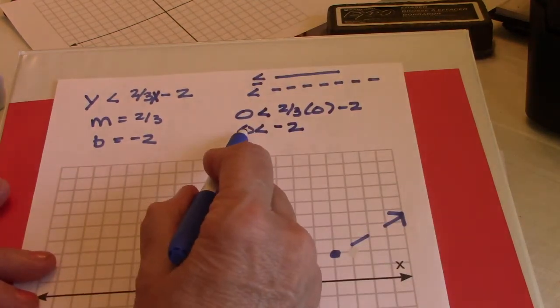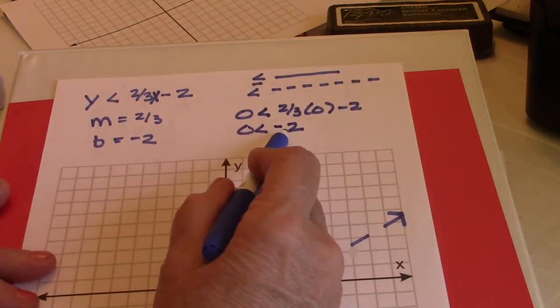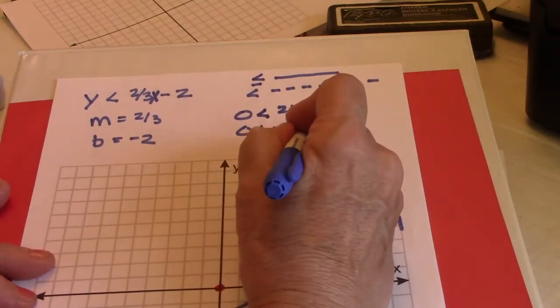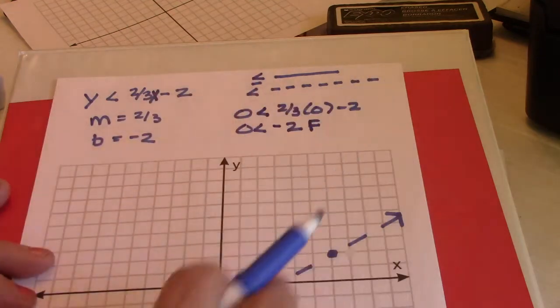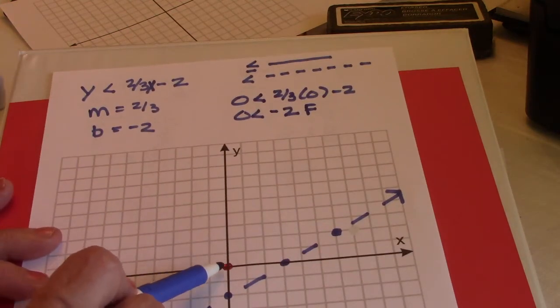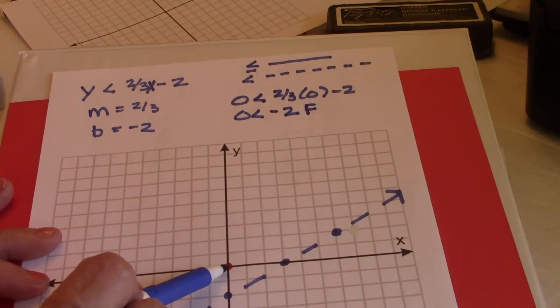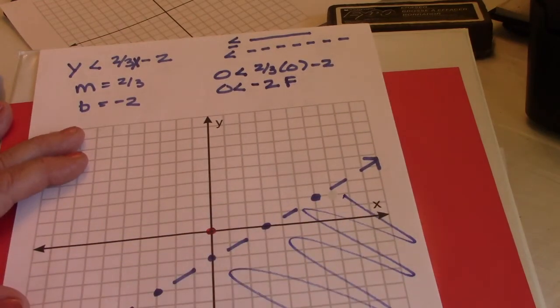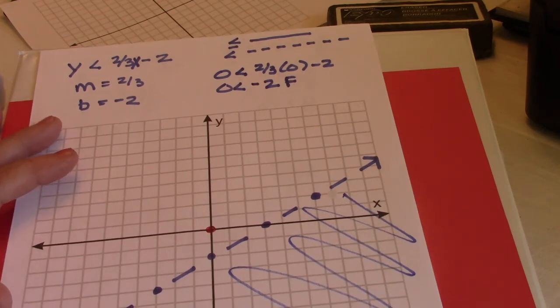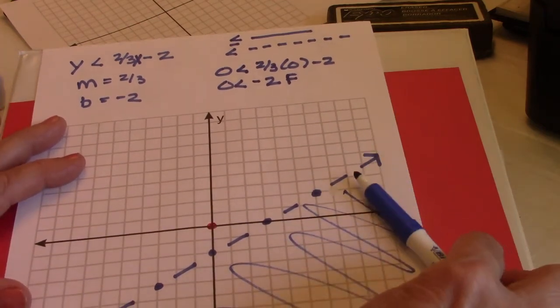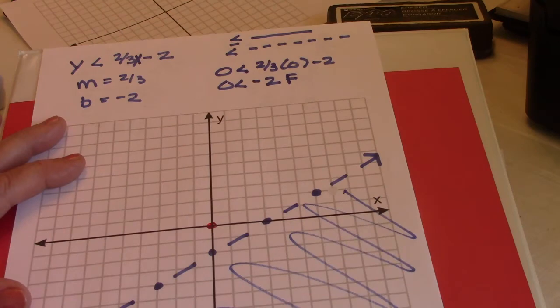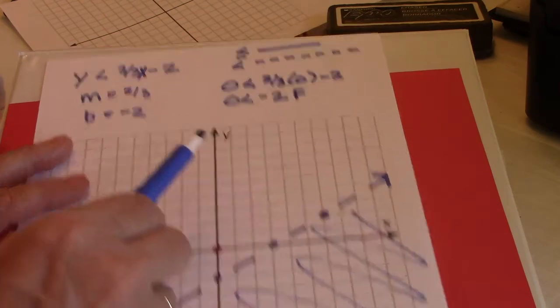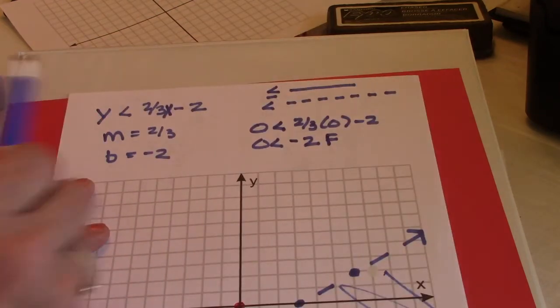Zero is less than two-thirds times zero is zero minus two is negative two. So is zero less than negative two? Is zero less than being two dollars in the hole? That is a false statement. That is not true. So this point won't work. This point won't work, so that means I have to shade going this direction.